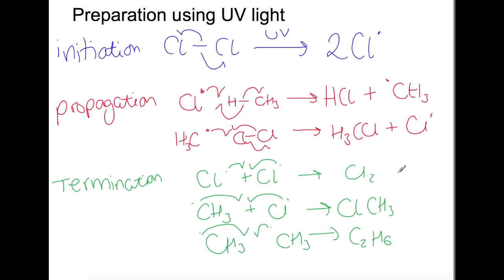You get a large mixture of products produced when you use UV light to prepare haloalkanes. It's not really a useful synthetic route to haloalkanes because you don't know which one you're going to produce. The chloromethane that is produced here could carry on in further propagation reactions to produce dichloromethane, trichloromethane, tetrachloromethane. So you won't just get one haloalkane being produced. You'll have a number of different products being produced.